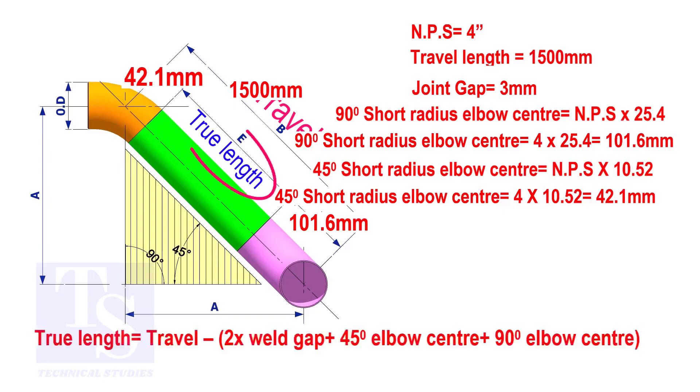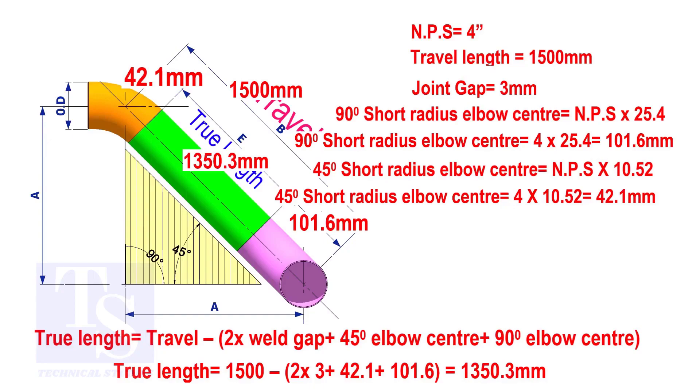To calculate the true length of the pipe, subtract two weld gaps plus both elbow centers from the travel length. The true length of the pipe is 1350.3 millimeters.